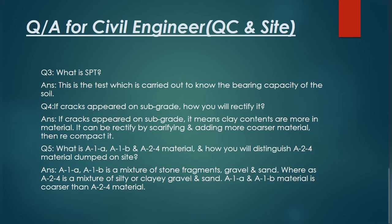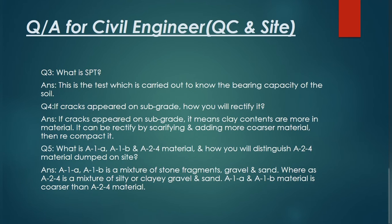Question number five: what is A1A, A1B, and A2P material and how will you distinguish between them? These are all classes of soil or filling material. A1A and A1B is a mixture of stone fragments, gravel, and sand. Whereas A2P is a mixture of silty or clay gravel and sand. A1A and A1B material is coarser than A2P material. These are the differences by which you will distinguish this material.